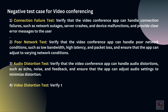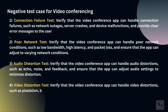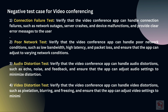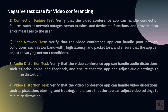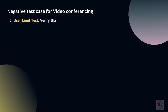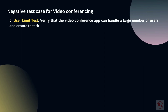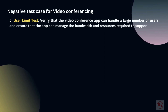4. Video distortion test: Verify that the video conference app can handle video distortions, such as pixelation, blurring, and freezing, and ensure that the app can adjust video settings to minimize distortion. 5. User limit test: Verify that the video conference app can handle a large number of users, and ensure that the app can manage the bandwidth and resources required to support a high number of participants.